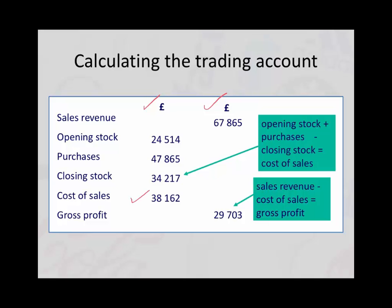The cost of either making those toy trains or buying them from our supplier was £38,162. So very simply, we take away how much it cost us from how much we sold them for, and that gives us our gross profit of twenty-nine thousand seven hundred and three pounds.